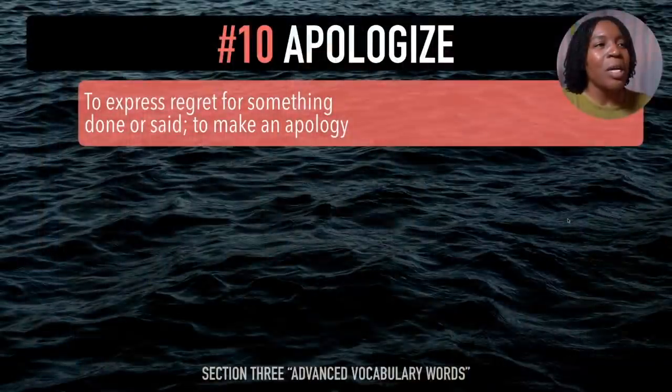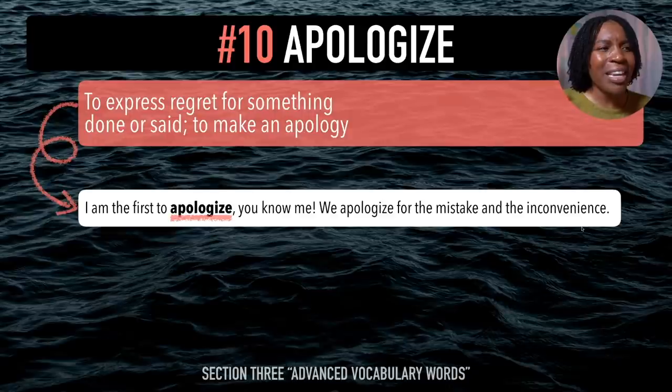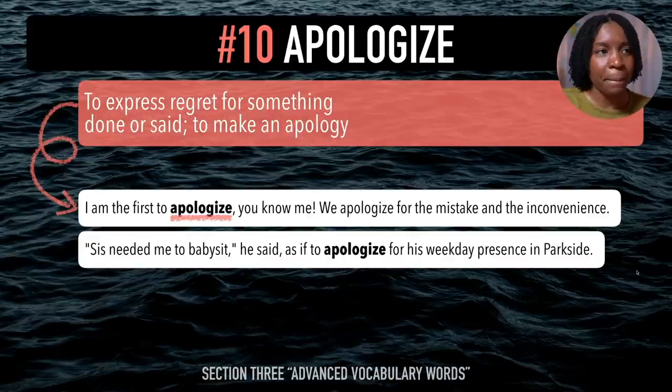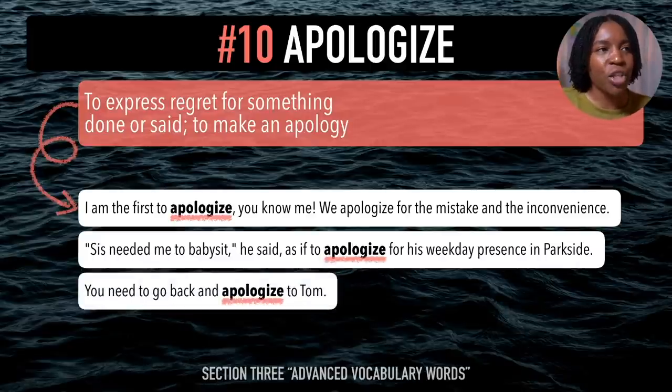The last advanced word is 'apologize'. After me — apologize. You hear that 'juh' sound again. This means to express regret for something done or said, or to make an apology. Example sentences: I am the first to apologize — you know me. We apologize for the mistake and the inconvenience. He said it as if to apologize for his weekday presence in Parkside. You need to go back and apologize to Tom. Last time — apologize. You've finished section three and now you've mastered the 'juh' sound.